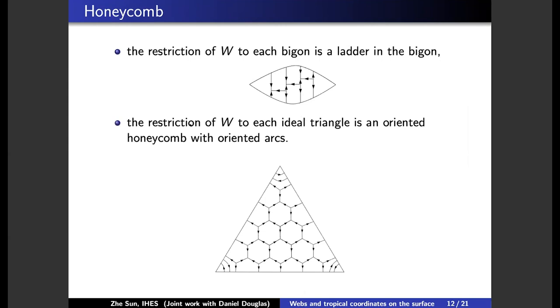And moreover, the restriction of the web to each ideal triangle is an oriented honeycomb with oriented arcs in a corner. It looks like the picture below. You have a lot of honeycomb in the middle and you have corner arcs here. And actually, generally, you have some arcs here.